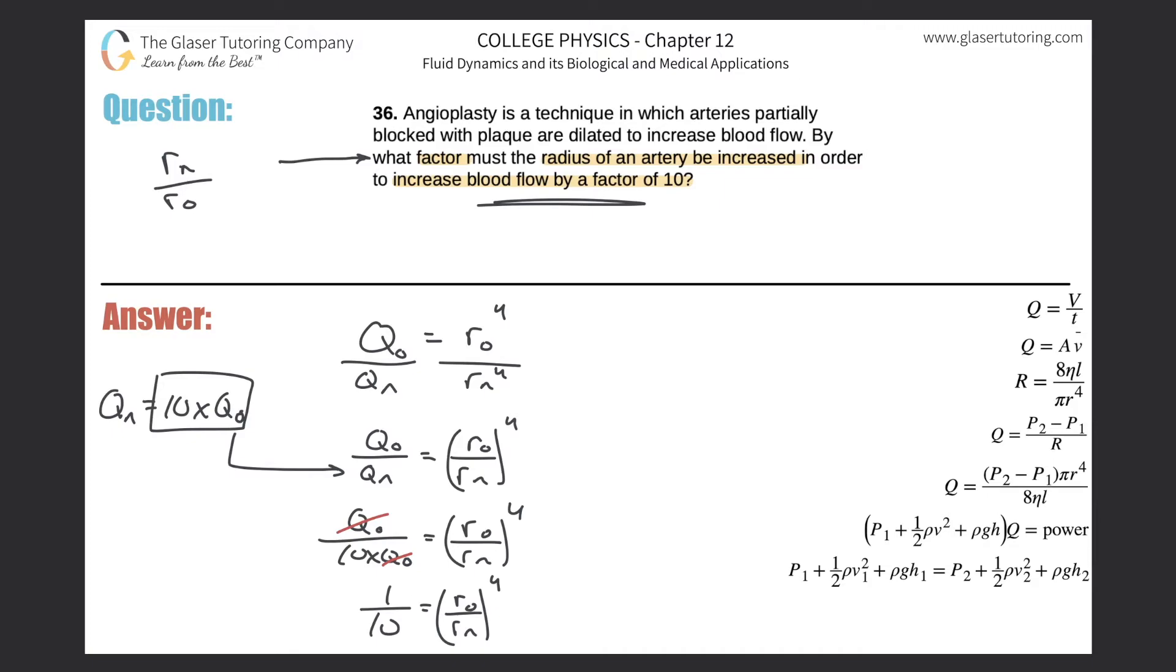So that being the case, I know that if I want to increase the blood flow by a factor of 10, the new radius better be larger than the old. And that's the whole point of the angioplasty—to increase the radius of the artery.